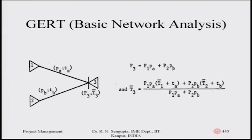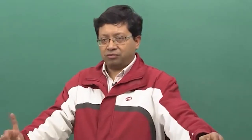The overall probability is P_3 = P_1·P_A + P_2·P_B. The time is a weighted average: T̄_3 is computed from T̄_1 and T̄_2 as average times, with small t_A, t_B denoting arc times. From this we can find T̄_3, and the concept extends naturally to more nodes with more exclusive OR or inclusive OR connections.